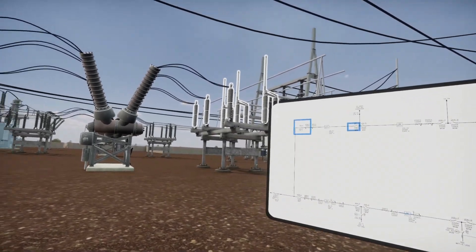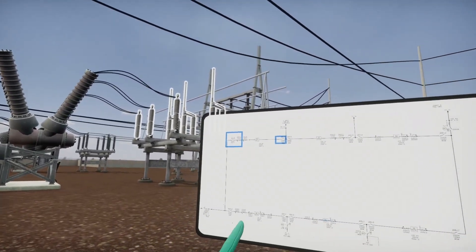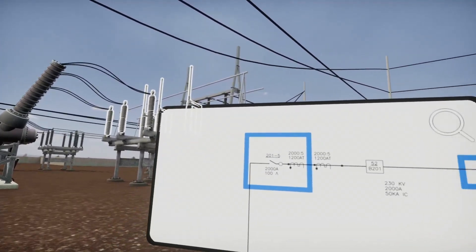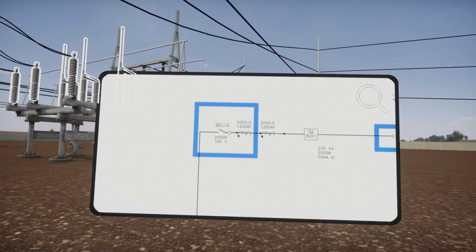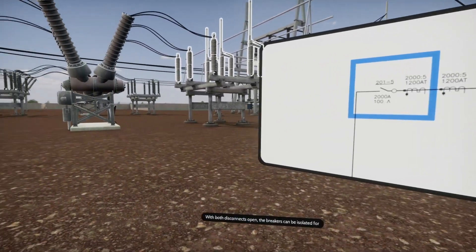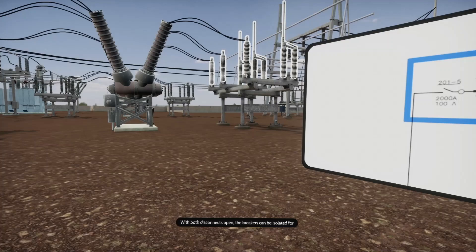Multiple air disconnect switches allow isolation of equipment such as breakers and transformers. With both disconnects open, the breakers can be isolated for maintenance or replacement without de-energizing remaining circuits.